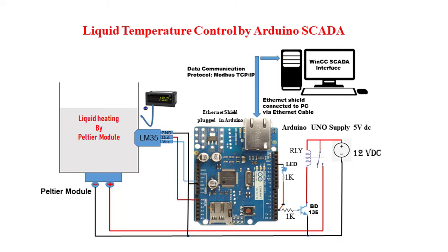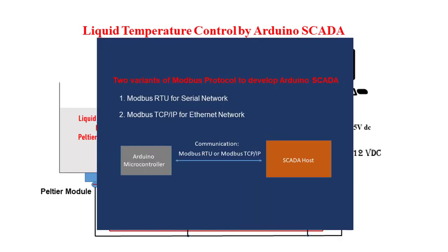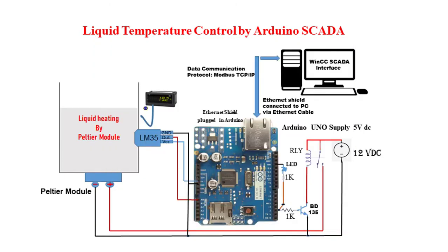To perform the temperature control operation by Arduino, a suitable Modbus sketch has been uploaded to the Arduino Uno microcontroller. To operate and monitor this control operation, a SCADA interface has been created using WinCC SCADA software. There are two variants of Modbus protocol: Modbus RTU protocol for serial network and Modbus TCP/IP protocol for Ethernet network. In this project, Arduino uses Modbus TCP/IP protocol to communicate with the SCADA interface. To establish this communication, an Ethernet shield has been plugged into the Arduino Uno microcontroller and an Ethernet cable has been used to connect Arduino with the computer.